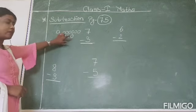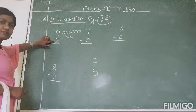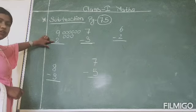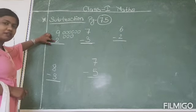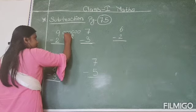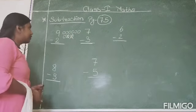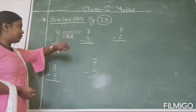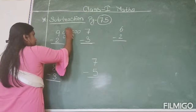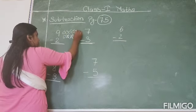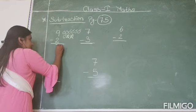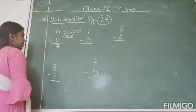So we have drawn 9 circles. Now we will count the remaining circles after cutting. One, two, three, four, five, six, seven. So your answer will be 7. Your answer is 7.